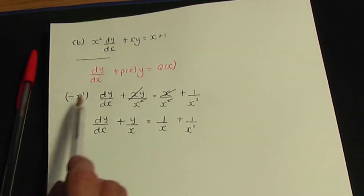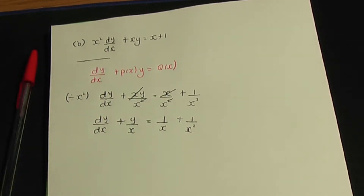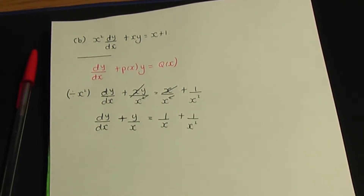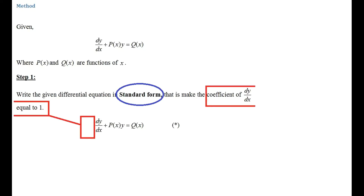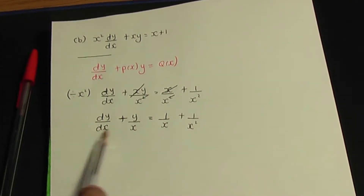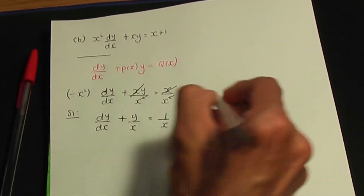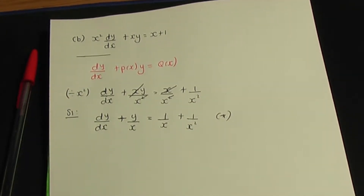This equation is of the form dy over dx plus p(x)y equals q(x), so we have a first order linear differential equation. Remember step one: we need to write our differential equation in standard form. Our equation is already in standard form, so we've completed step number one. I'm going to call this standard form equation star, as I did in the previous example.